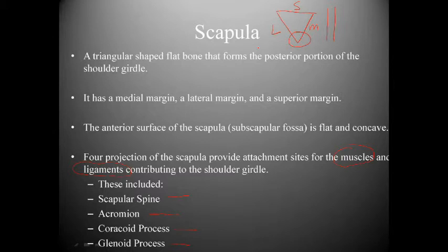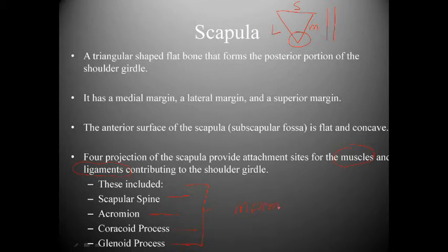The anterior surface of the scapula is called the subscapular fossa, and it is flat and concave. There are four projections of the scapula that provide attachment sites for muscles and ligaments: the scapular spine, the acromion, the coracoid process, and the glenoid process. Without each of these, movement of the shoulder would not be possible.